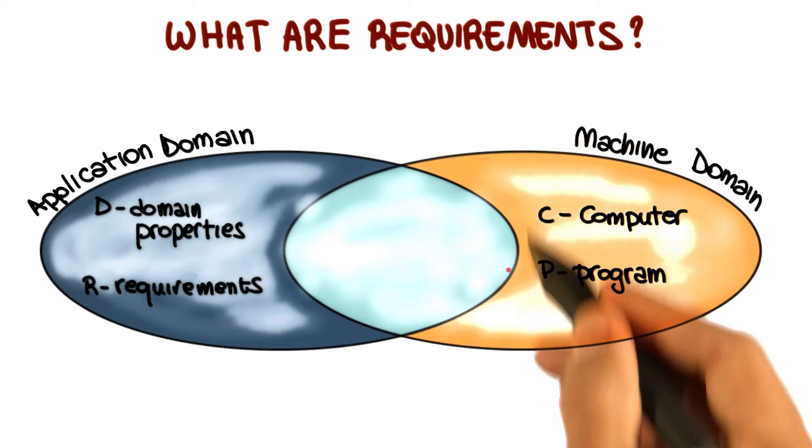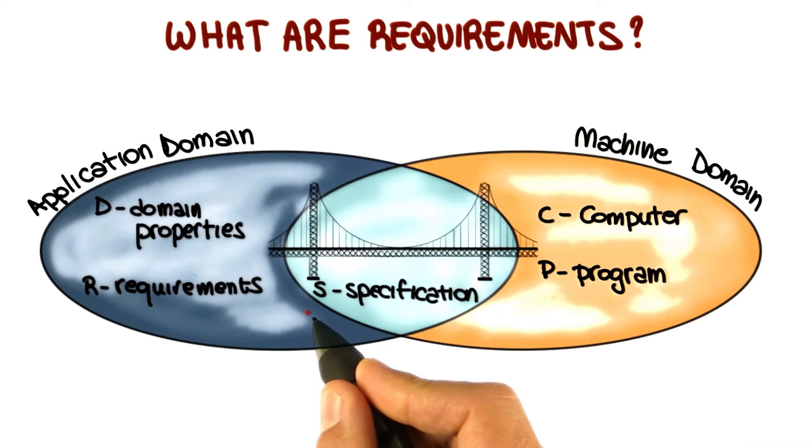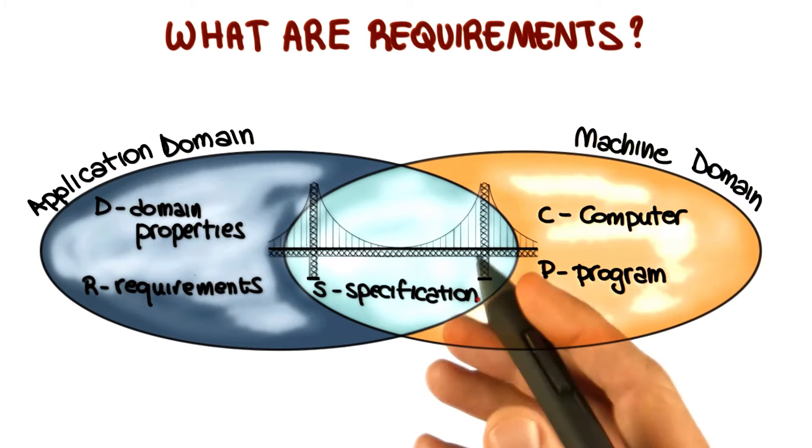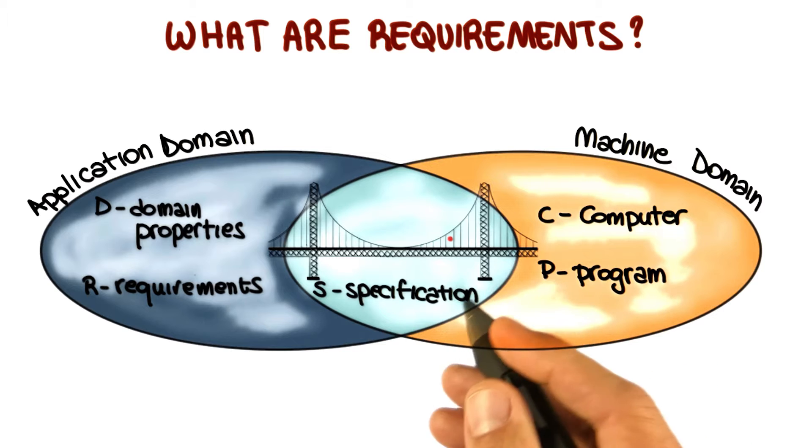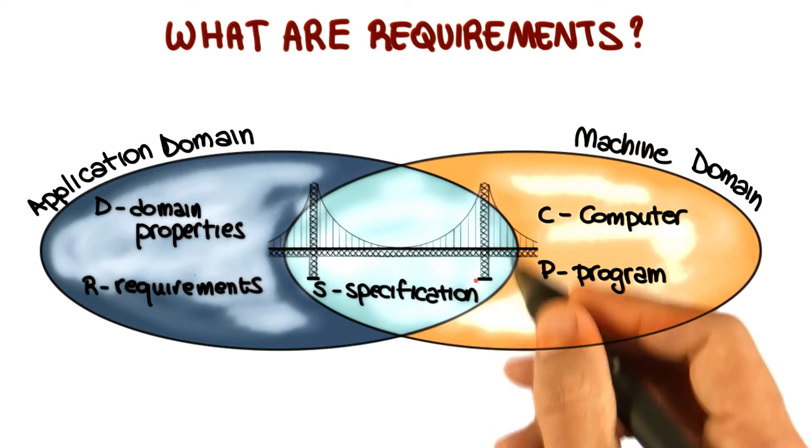So we have something here at the intersection of this application domain and machine domain. And what is that? This is what we normally call the specification, which is a description, often a formal description, of what the system that we are building should do to meet the requirements. So this is a bridge between these two domains.